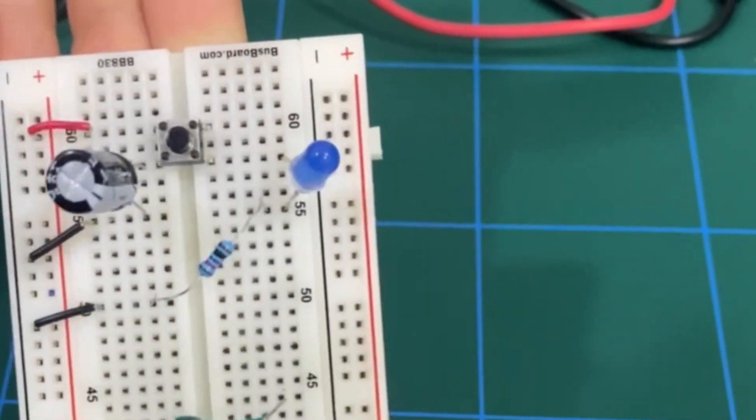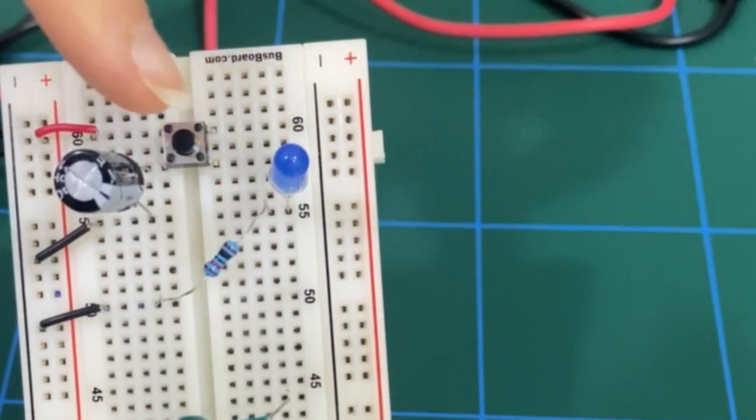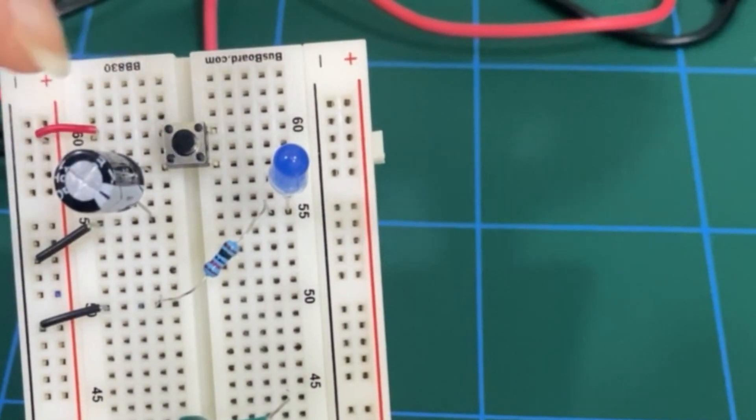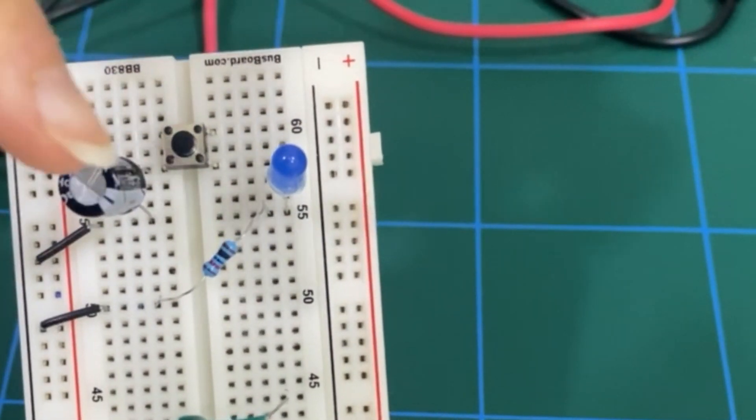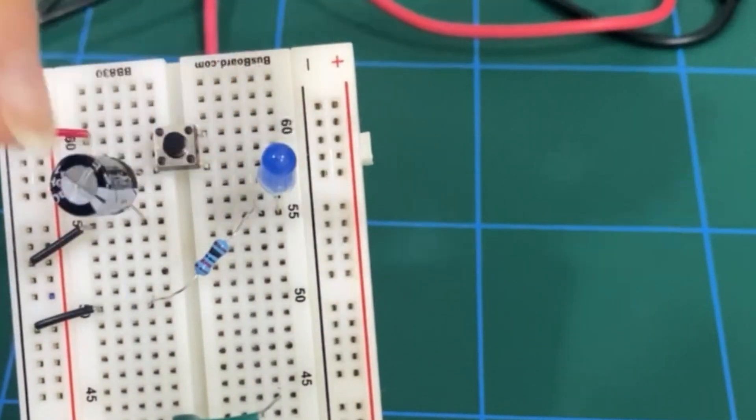As we let go, we basically cut off the power supply from the capacitor. So it's only the capacitor working and it will find a path to discharge through the LED.